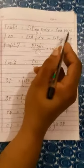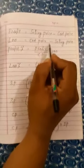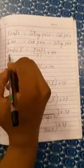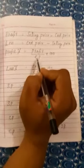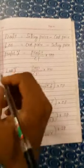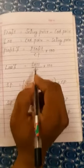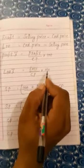Profit is equal to selling price minus cost price. Loss is equal to cost price minus selling price. Profit percent is equal to profit upon CP multiplied by 100. Loss percent is equal to loss upon CP multiplied by 100.